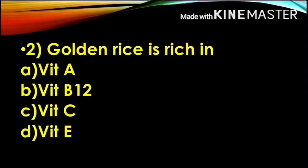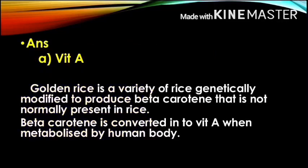Next question: Golden Rice contains which vitamin? Option A, Vitamin A; Option B, Vitamin B12; Option C, Vitamin C; and Option D, Vitamin E. The correct answer is Option A, Vitamin A. Golden Rice contains Vitamin A.